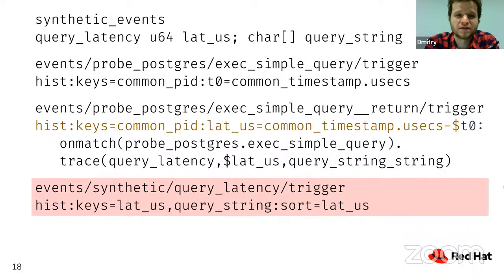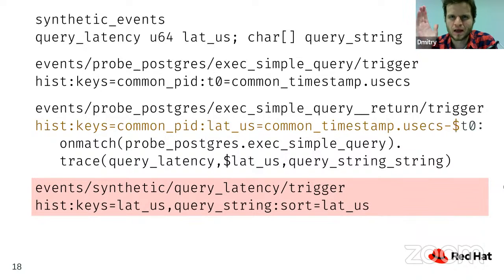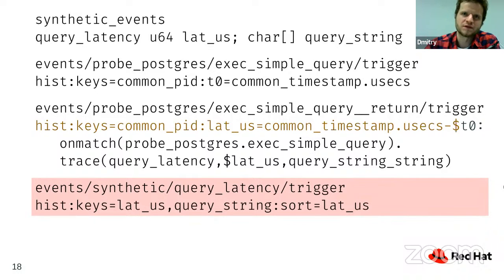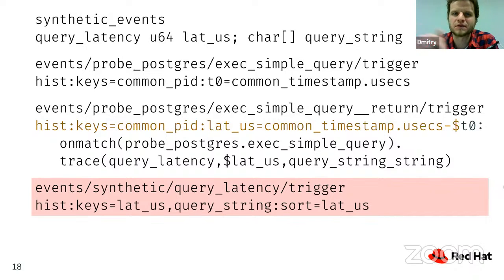The result is similar to pg_stat_statements — a histogram of query latencies. The caveat is that queries are not normalized, so you may see similar queries that look slightly different. This could be addressed using a query ID or similar approach. This minimal example shows what can be done with ftrace alone, and the example was heavily inspired by a similar one in Brendan Gregg's Systems Performance book.